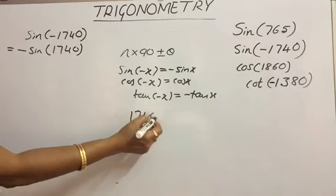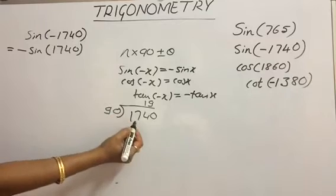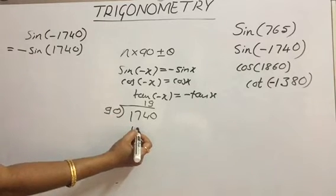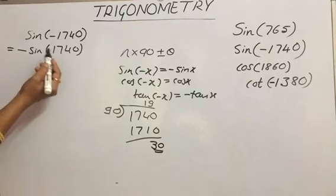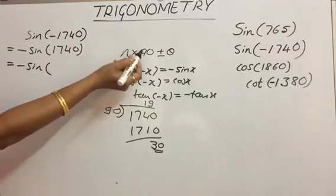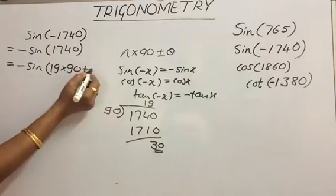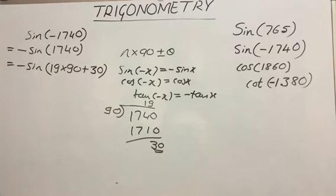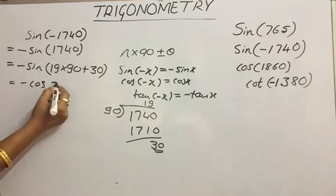Now divide 1740 by 90. We get 19 times, so 19×90 = 1710. The remainder will be 30. So representing 1740 in plus form: −sin of 19×90 + θ, where θ is the remainder, that is 30. Now check n = 19, which is odd. When n is odd, apply co-ratio. So sine converts to cos. We get cos of the remainder, that is cos 30.